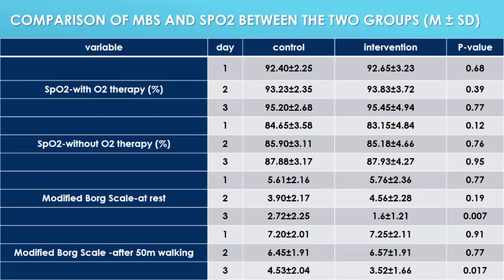There was also no significant difference in dyspnea at rest or after activity between the two groups based on the MBS on day one. Breathing improved in both groups on days two and three, with no significant difference on day two. However, a significant difference was found between the BBE and control group at rest and after activity on day three of the trial, with p-value ≤ 0.05.